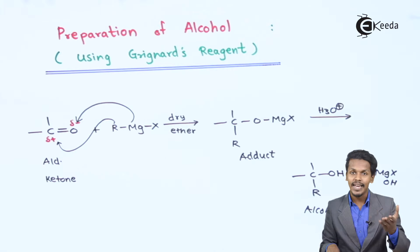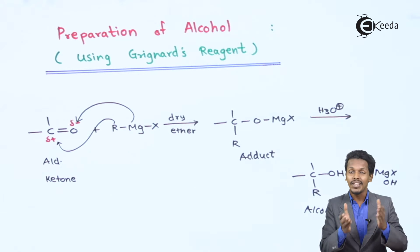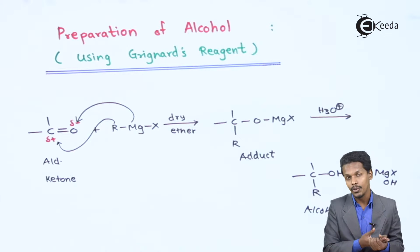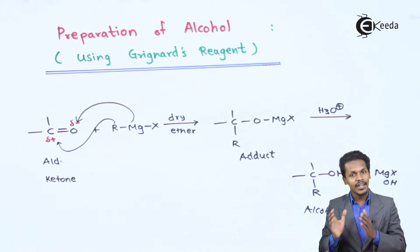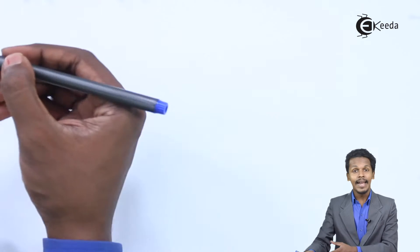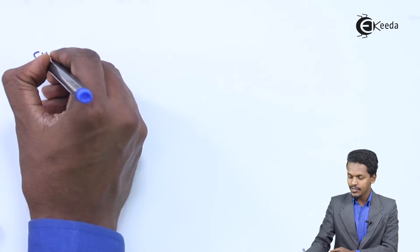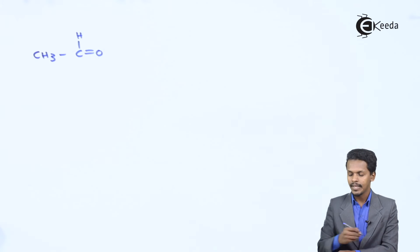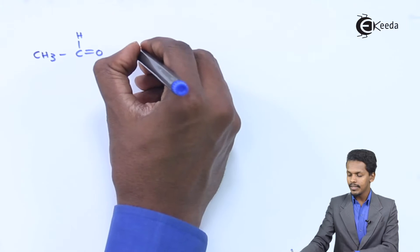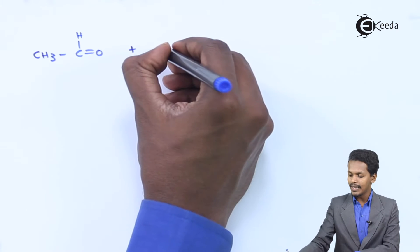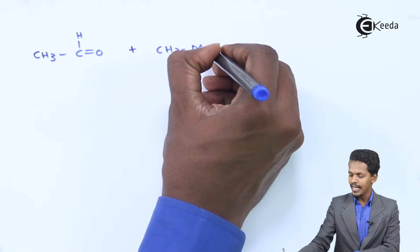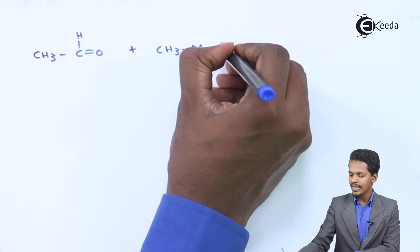This alcohol can be primary, secondary, or tertiary depending on whether we are using an aldehyde or a ketone. Let me give you an example. Suppose we have considered an aldehyde, that is CH3CHO (acetaldehyde), and we are treating it with a Grignard reagent, CH3MgBr.